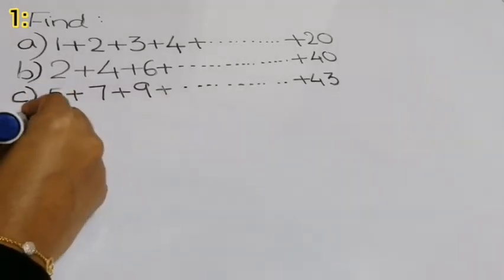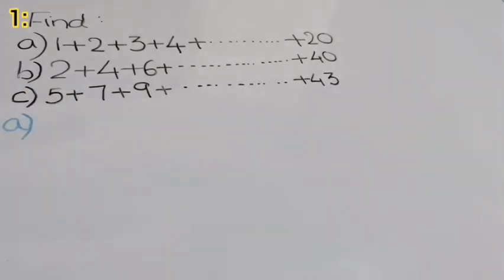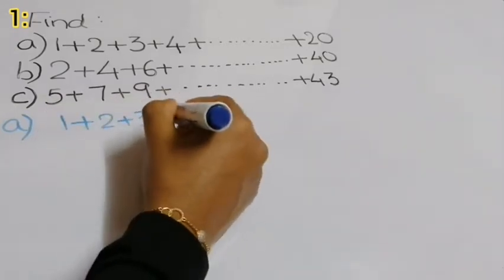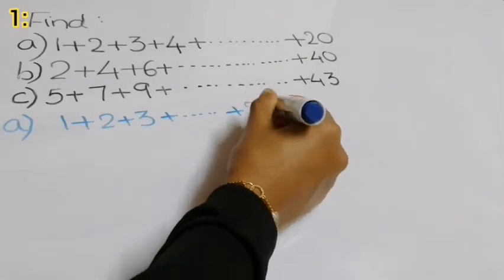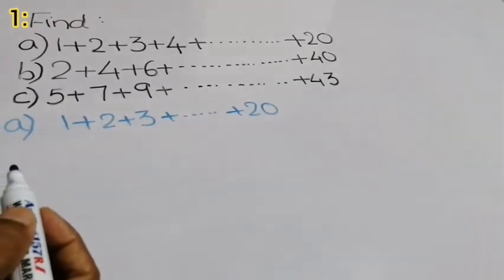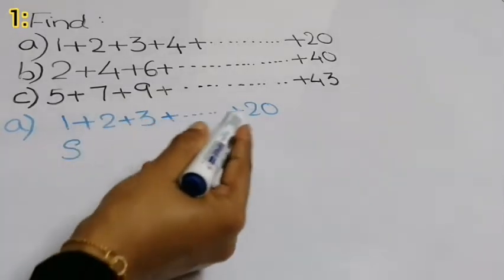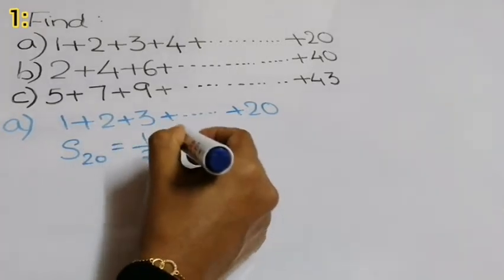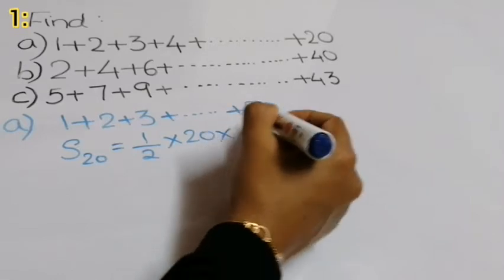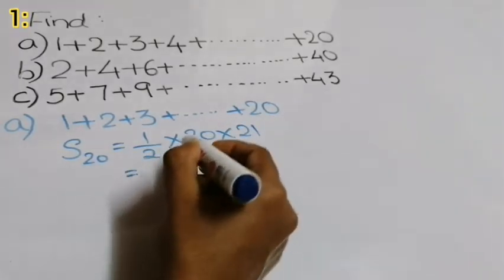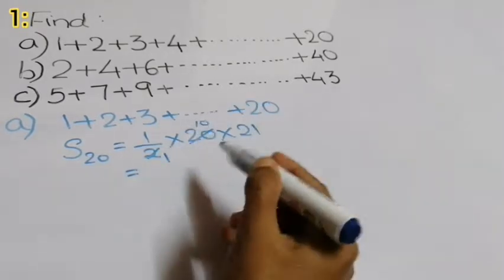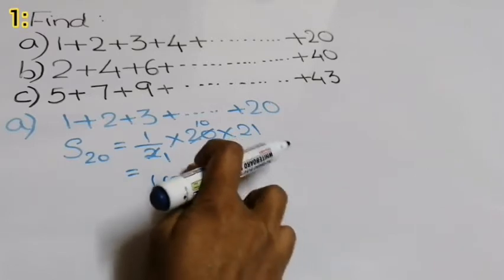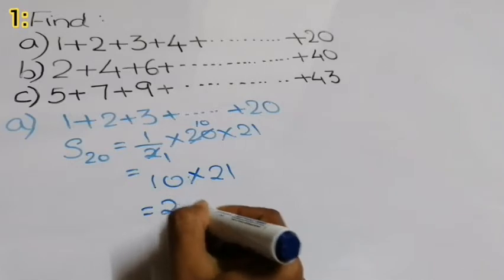Let's begin with the first one. The question is 1 plus 2 plus 3 plus 4, and so on up to 20. These are natural numbers starting from 1. We have the formula — there are 20 natural numbers here. The formula is: half into n into (n plus 1). So we have n = 20 and n+1 = 21. That gives us 10 into 21, which is equal to 210.